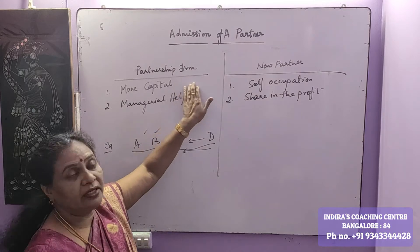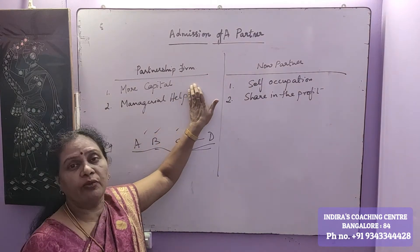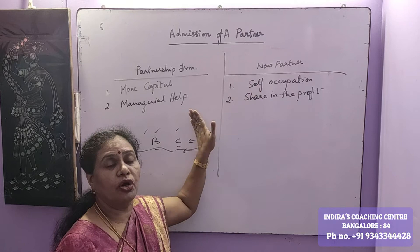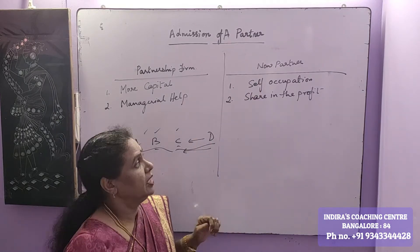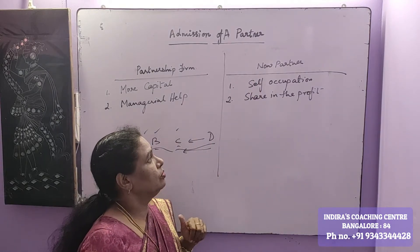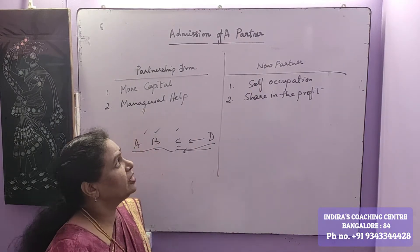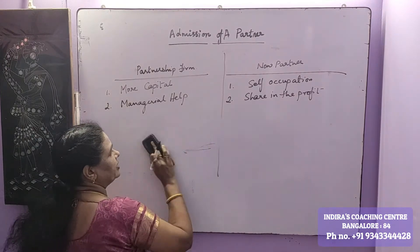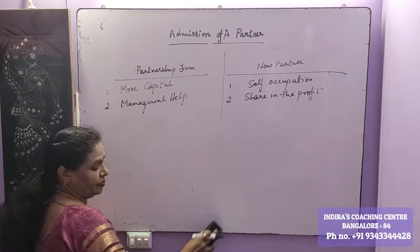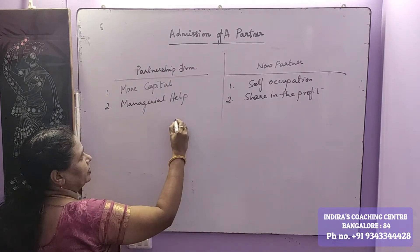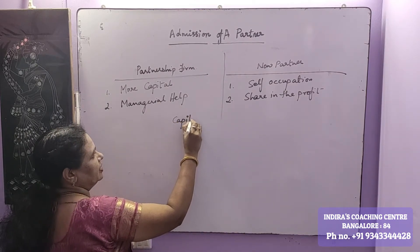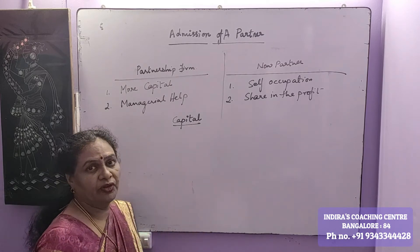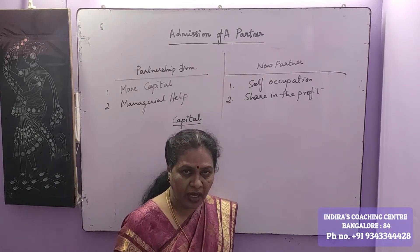So you got the reasons as to why the partnership firm requires an extra person and why a new person wants to join an existing business. Coming to the capital aspect: when a new partner enters, he has to bring capital — no doubt about it. Capital can be in the form of cash or it can be in the form of kind.